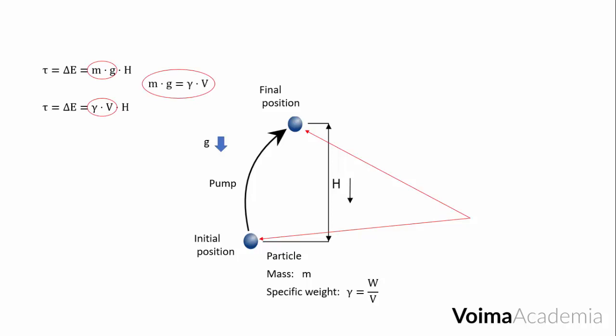But mgh is the weight of the particle, which is also equal to gamma v. Thus, the work will be equal to gamma vh. We define power as the work performed during a time t. But the volume divided by the time is the flow q. So, the power will be equal to gamma qh.